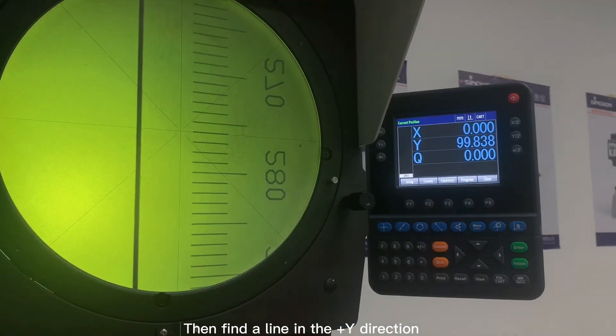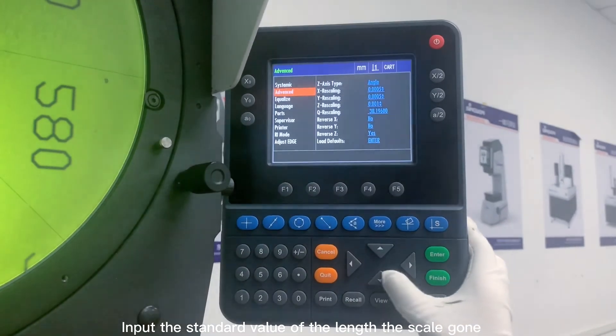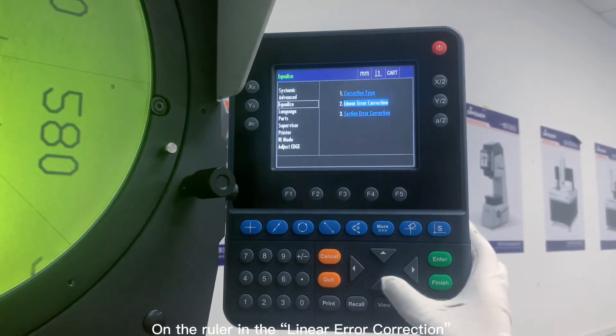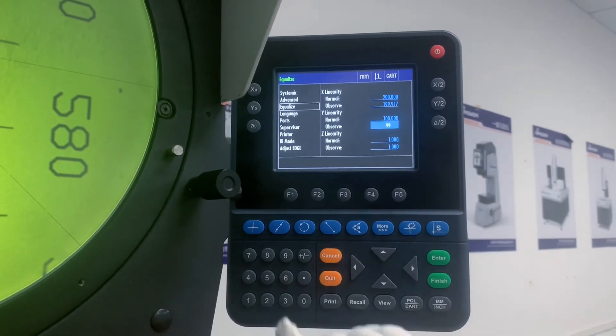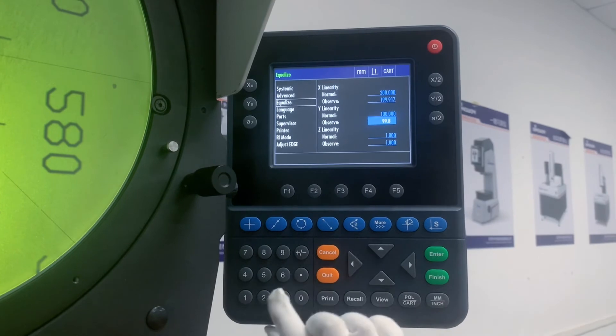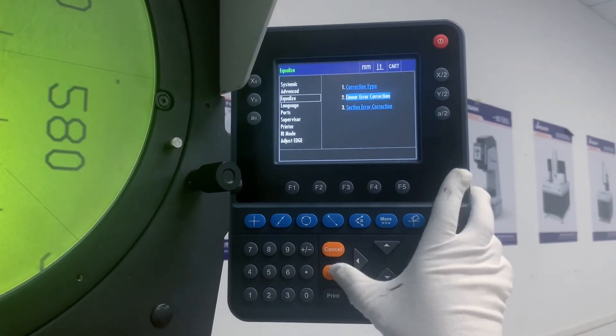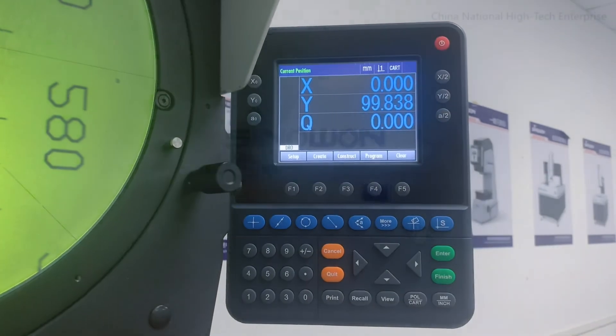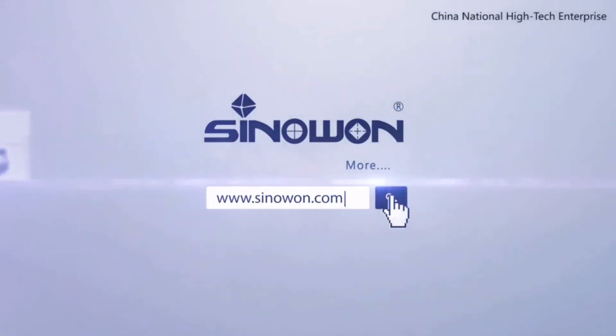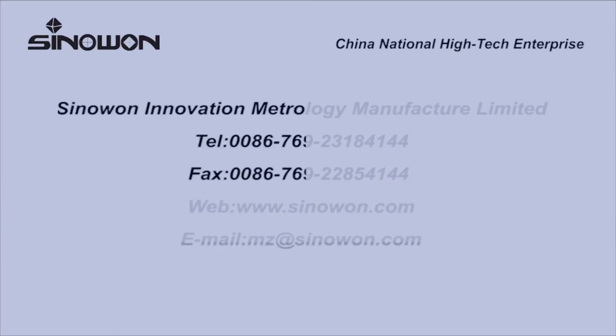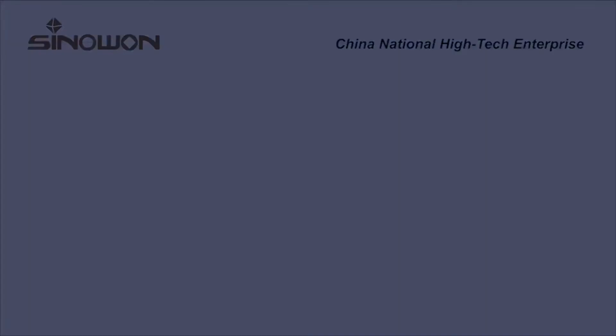Then find a line in the plus Y direction. Input the standard value of the length of scale on the ruler in the linear error correction. Input the observed value. The upper line should be aligned with the cross hair.